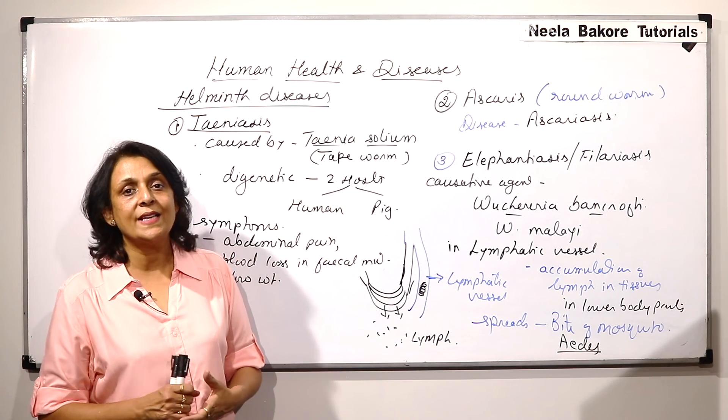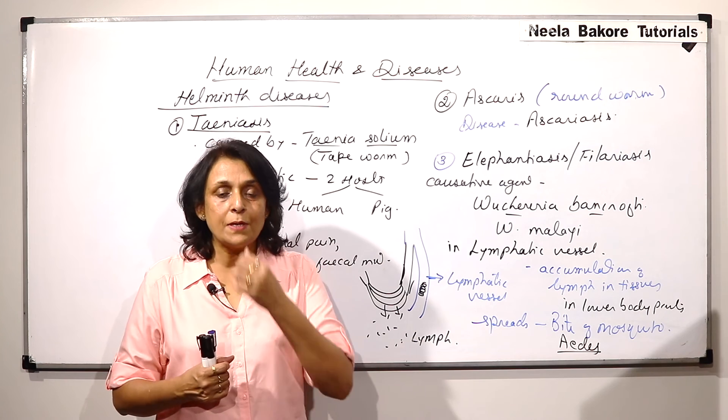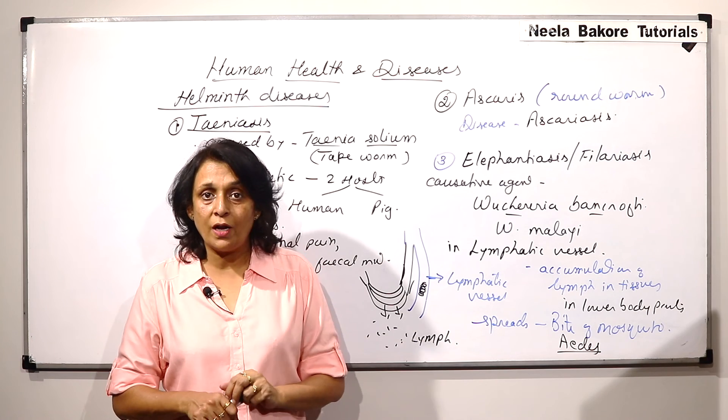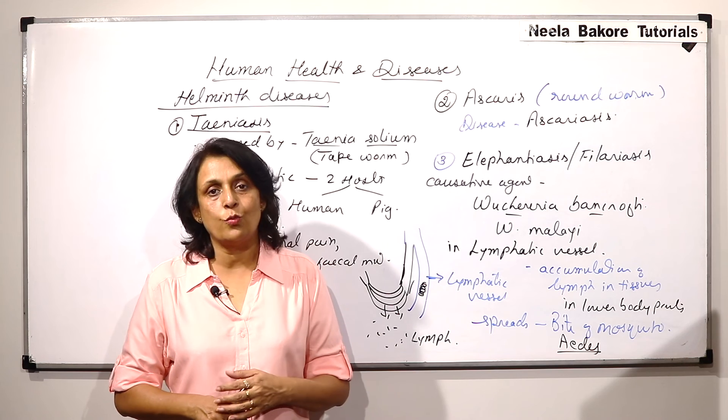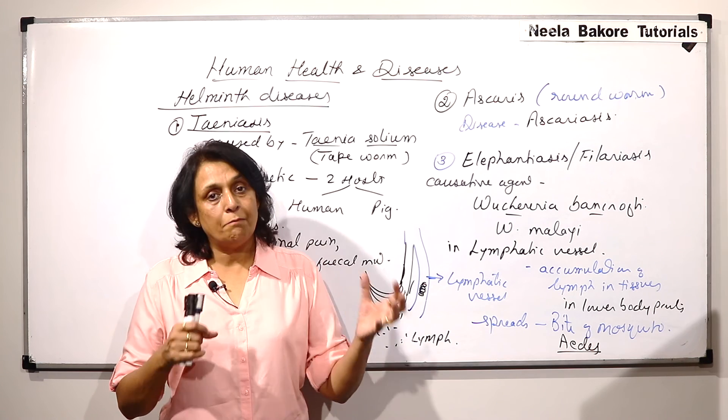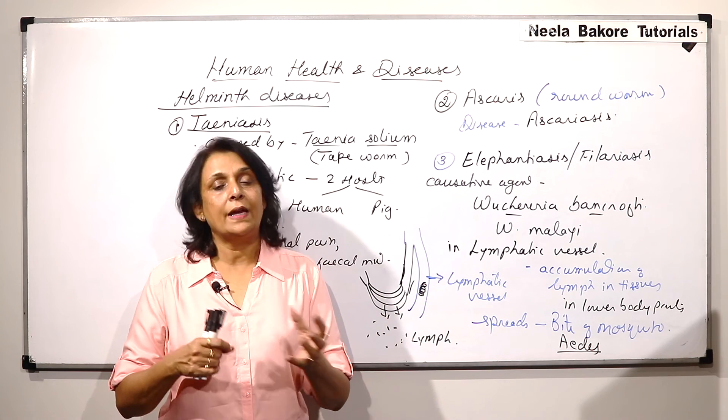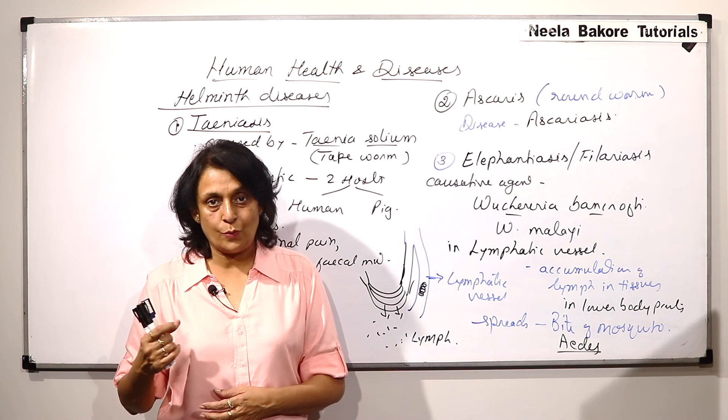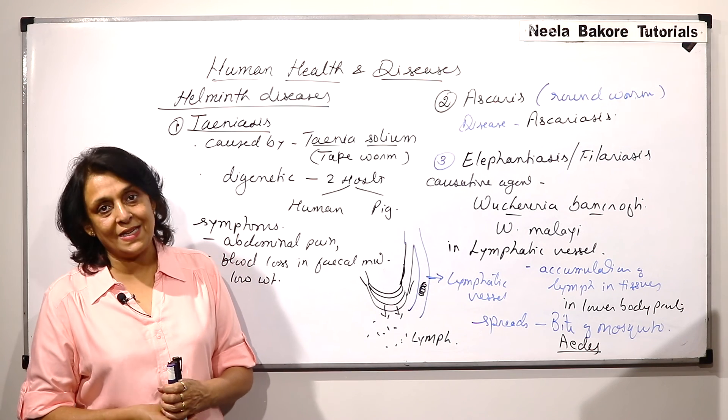Whenever an endoparasite is there in our body, then because it keeps absorbing the nourishment from our body, there is definitely loss of weight. And because of loss of weight, there can be other complications also. So, these are three helminth diseases.